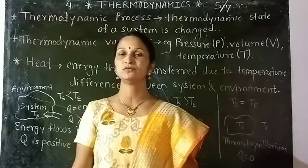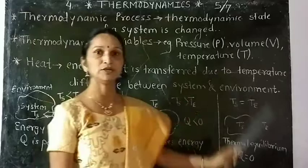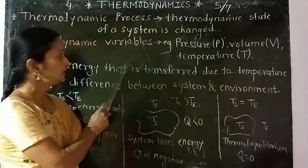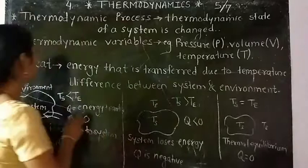When the steam exerts pressure on the wall of the container, the quantities such as pressure P, volume V, and temperature T are changed. These are known as thermodynamic variables — variables which change when the state of a system is changed, that means during a thermodynamic process.